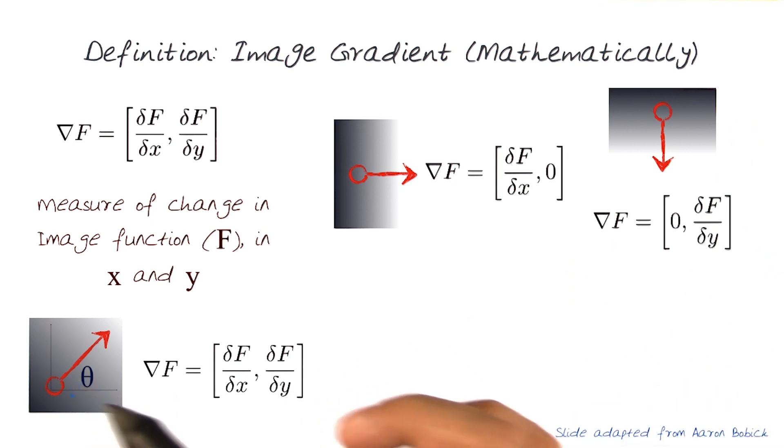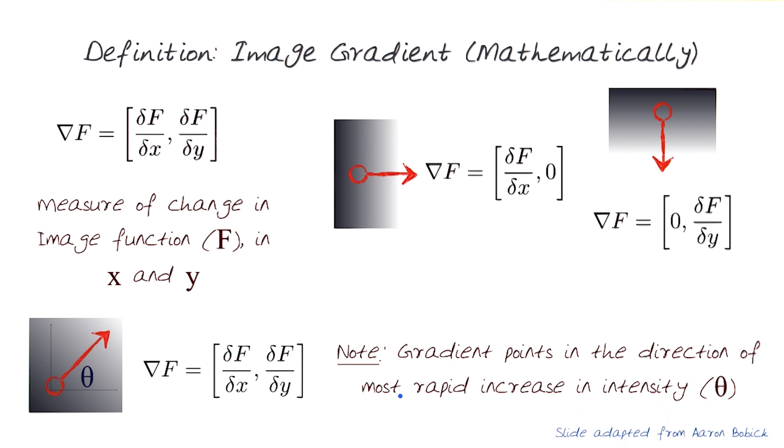Combining these two, we can look at if the changes are in both directions, then the gradient direction would be at an angle, which is theta. In essence, what that basically means is that the gradient points in the direction of the most rapid increase in intensity.